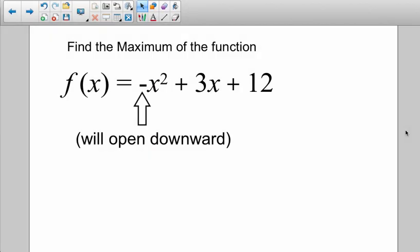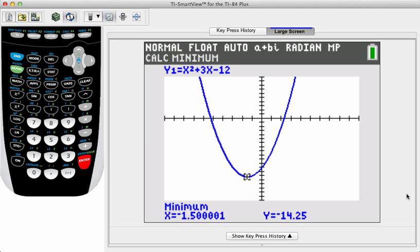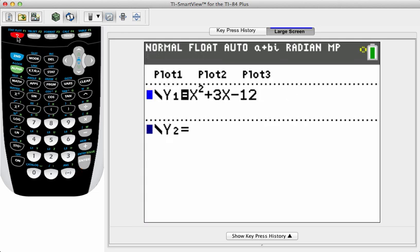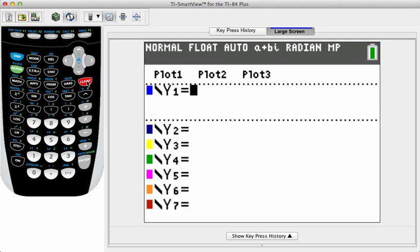All right, now let's take a look at a function that will have a maximum. Here's a function that will have a maximum, and one easy giveaway is to see that we've got a negative symbol right in front of the first term here. The quadratic term is negative. That means that this will open downward, and that we will have a maximum to this function. So here we are with our minimum. Let's go to the y equals screen, and let's clear this out. And we're going to put in the new function, negative x squared plus 3x plus 12.